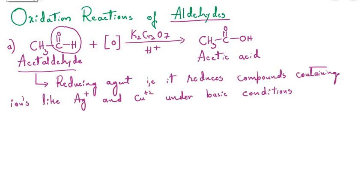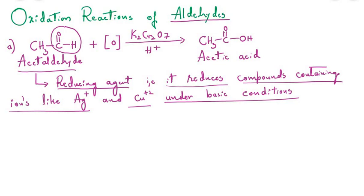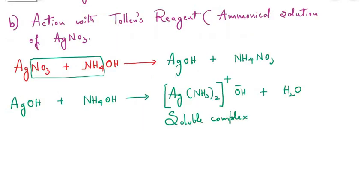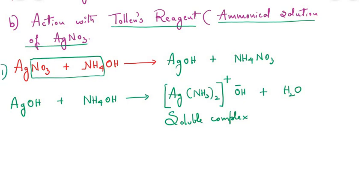It can be concluded that aldehyde is acting as a reducing agent, meaning it reduces compounds containing ions like Ag⁺ (silver) and Cu²⁺ (copper) under basic conditions. Now let us learn the action of an aldehyde with Tollens reagent. Tollens reagent is the ammoniacal solution of silver nitrate. The preparation involves two steps: first, AgNO3 is treated with ammonium hydroxide to give silver hydroxide and ammonium nitrate.